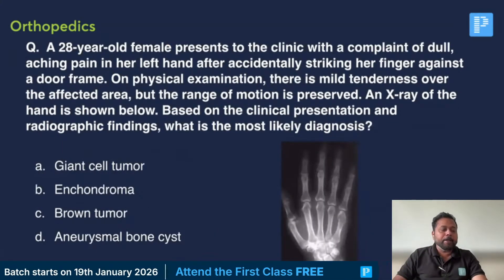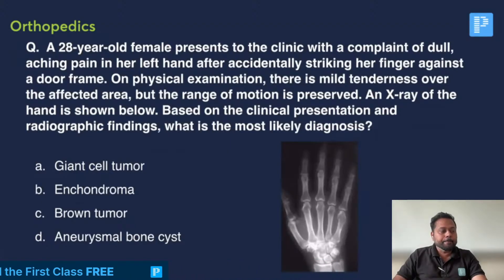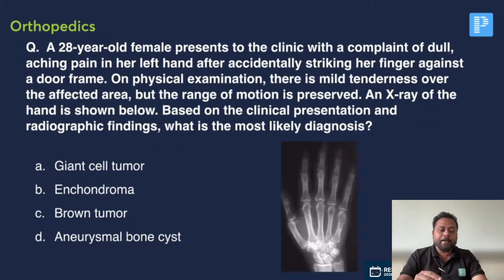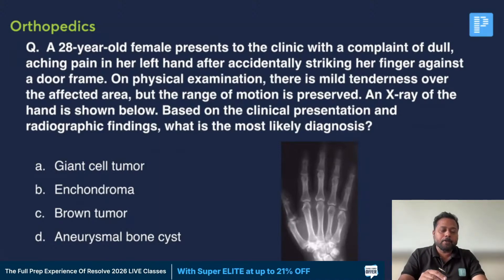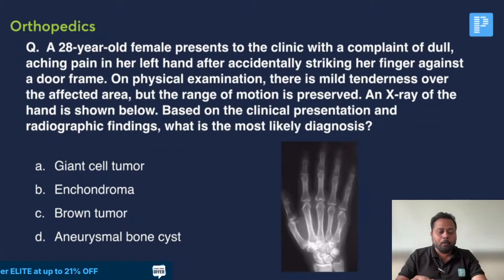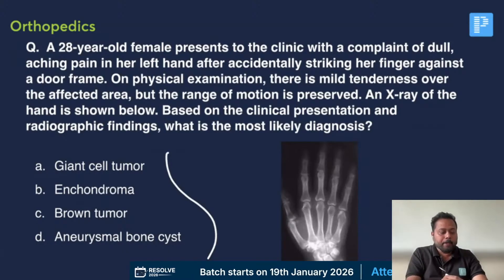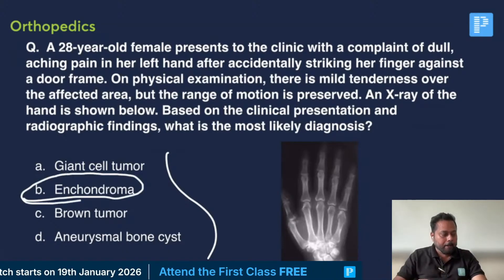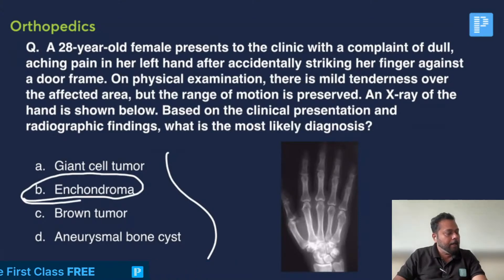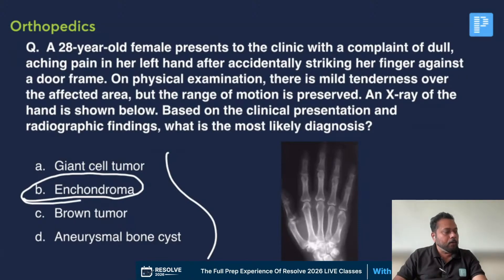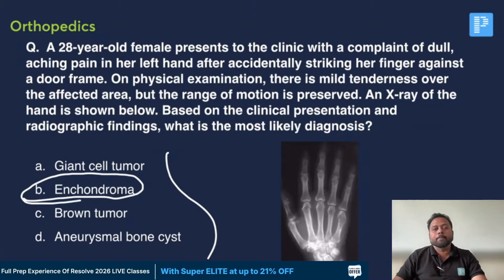A 28-year-old female presented with dull aching pain in her left hand after accidentally striking her finger against a door. On physical examination, mild tenderness is present over the affected area, but the range of movement is preserved. An X-ray of the hand is shown. The commonest pathology in the phalanges is enchondroma, and that should be the answer. Most of you answered enchondroma correctly.